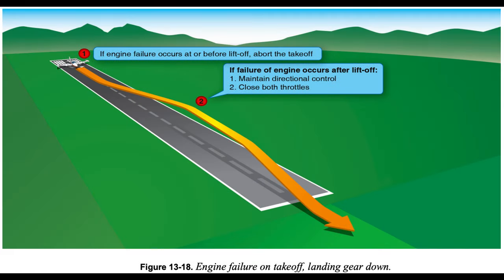Landing gear down scenario: If the engine failure occurs prior to selecting the landing gear to the up position, keep the nose as straight as possible, close both throttles, adjust pitch attitude to maintain adequate airspeed, and descend to the runway. Concentrate on a normal landing and do not force the aircraft on the ground. Land on the remaining runway or overrun. The chances of maintaining directional control while retracting the flaps, landing gear, feathering the propeller, and accelerating are minimal. On some airplanes with a single-engine-driven hydraulic pump, failure of that engine means the only way to raise the landing gear is to allow the engine to windmill or to use a hand pump — this is not a viable alternative during takeoff.